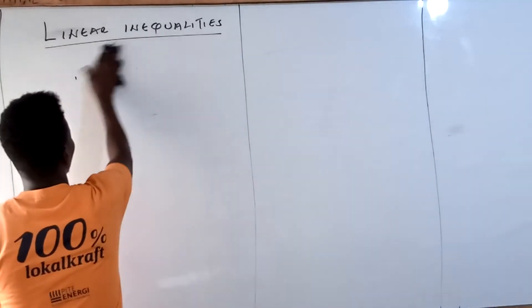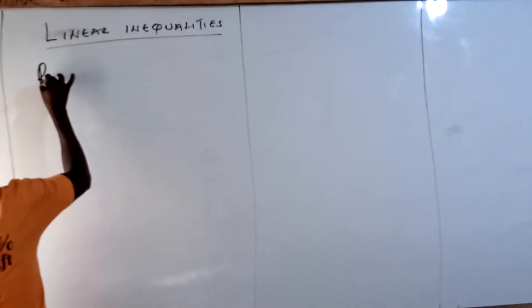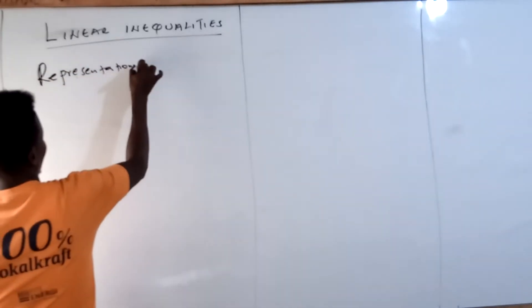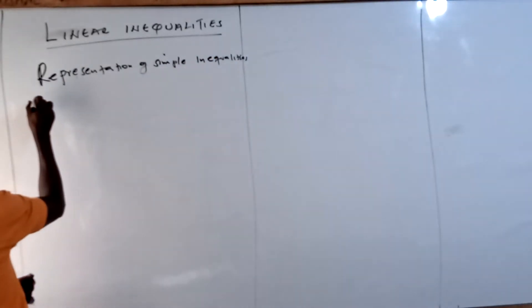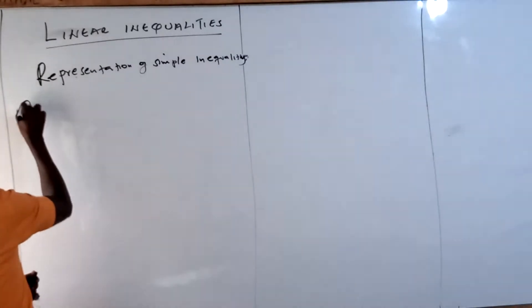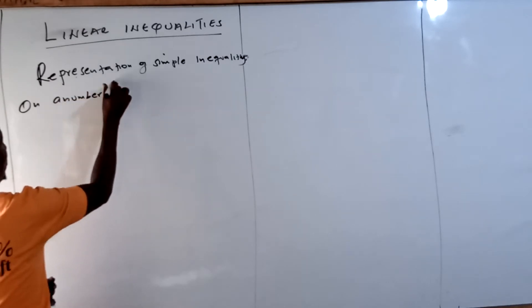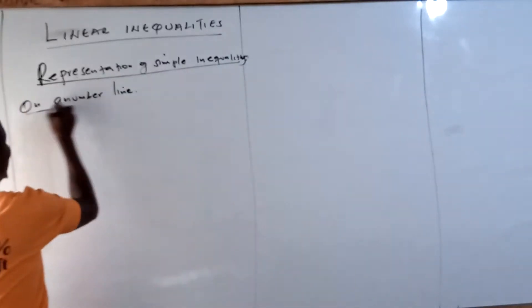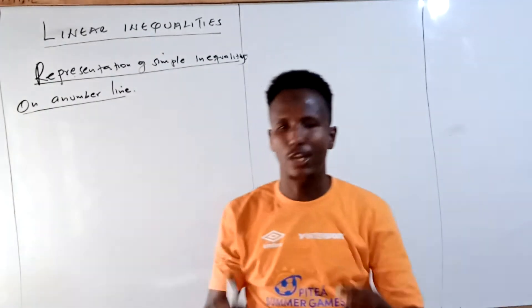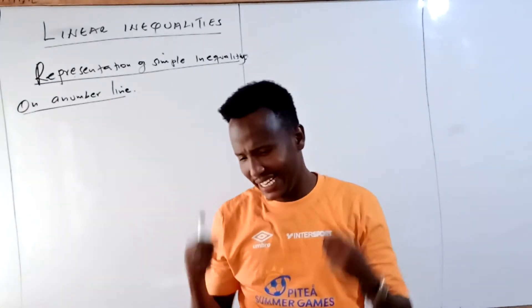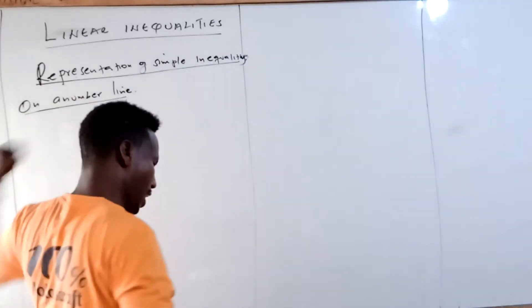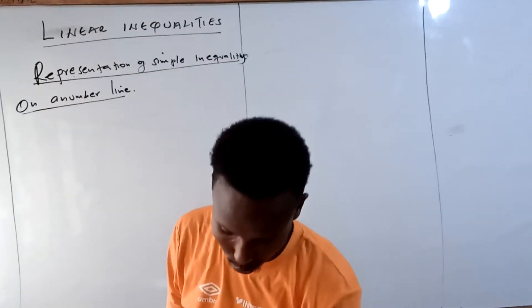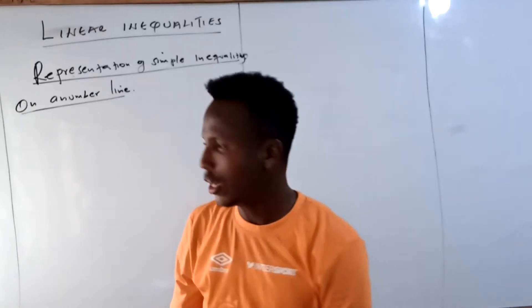Let's see how we are going to represent a simple inequality on a number line. A number line is a straight line which has zero in the middle; on the right-hand side it has positive integers, and on the left-hand side it has negative integers. That is the common concept. So now let's see examples.